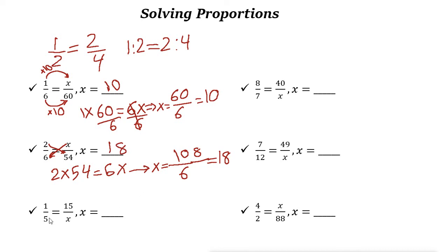Next one. Cross multiplication: 1 times x is just x. Equals 5 times 15, which is 75. So x is 75.